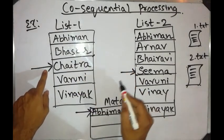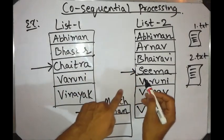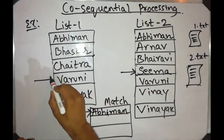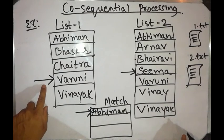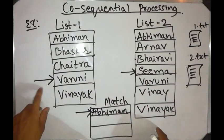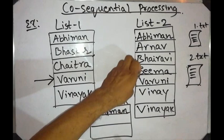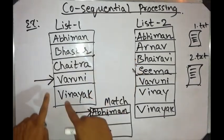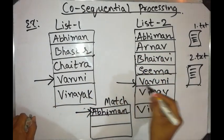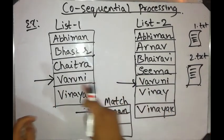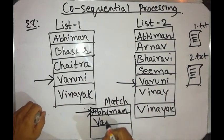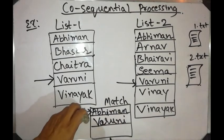We compare again — Sima, S is greater than C, so we advance in that list once more. Then comparing Varuni and Sima, V is greater, so we go one step ahead in the Sima list. Now comparing Varuni and Varuni — we have a match, so we write that to the match list.